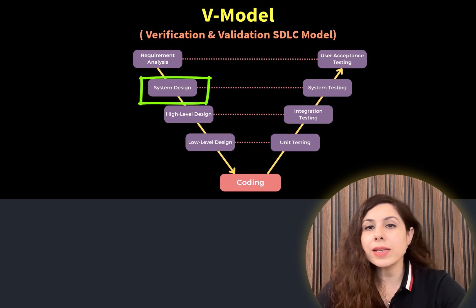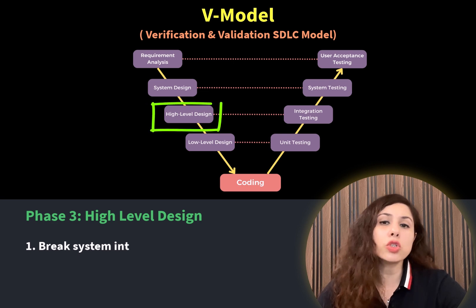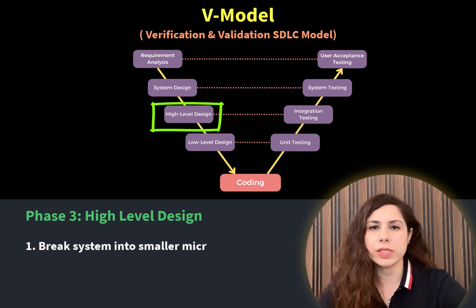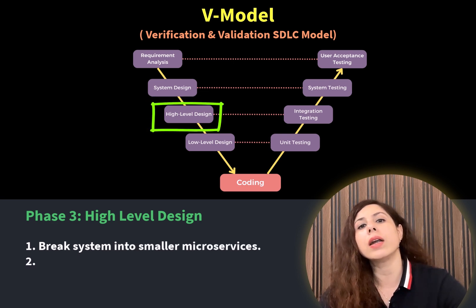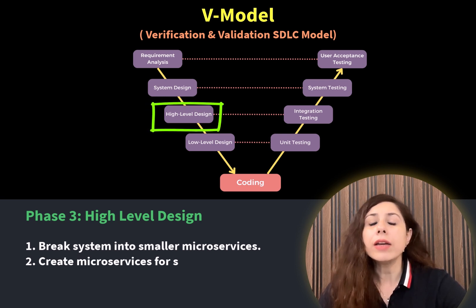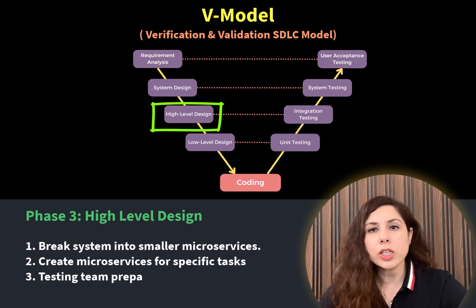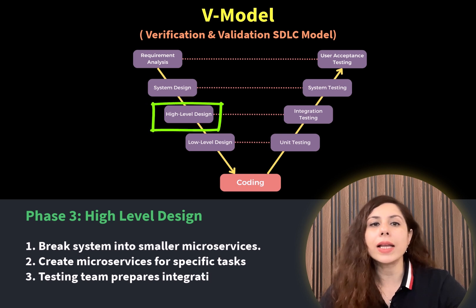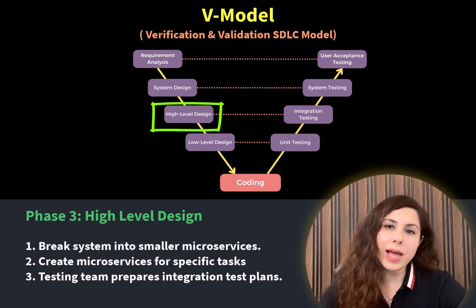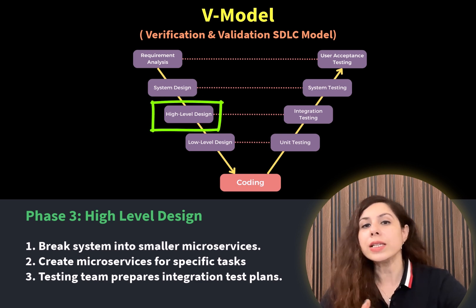The next phase is High Level Design. This involves breaking down the system into smaller modules or microservices. For example, if we are building an app for a hospital chain, we might have separate microservices for user management, appointment scheduling, test booking, and report reviewing. The testing team will create test plans for integration testing in this phase, which will be executed in the integration testing phase.